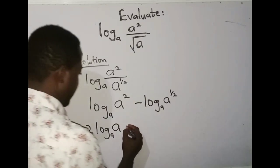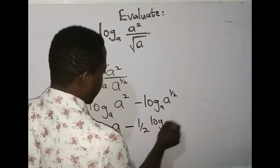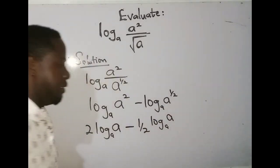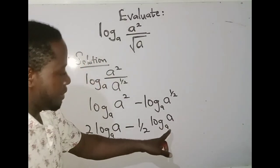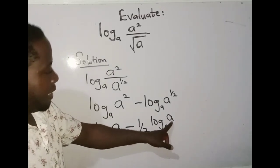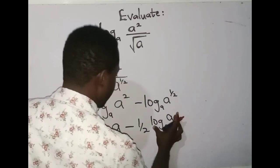I'm going to do the same thing here. So I'm going to have minus 1/2·log_a(a). Now, in logarithms, the rule says that when your base and the value are the same, it's going to change to 1.